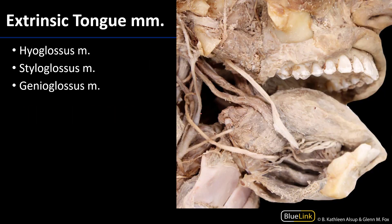Extrinsic tongue muscles are muscles that attach some part of the axial skeleton to the tongue. There are four major ones: palatoglossus, hyoglossus, styloglossus, and genioglossus — the three you need to know being hyoglossus, styloglossus, and genioglossus. The hyoglossus comes from the greater cornua of the hyoid bone and divides part of the sublingual space, such that the lingual and hypoglossal nerves run lateral to it and the lingual artery runs deep to the muscle.